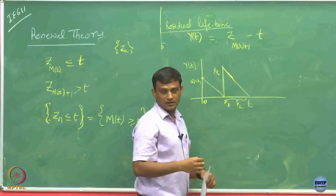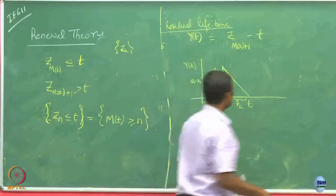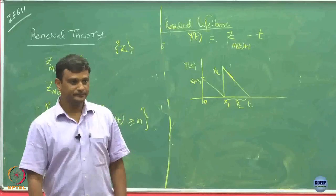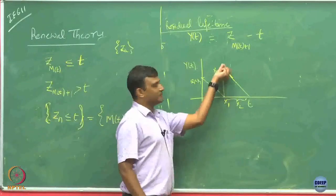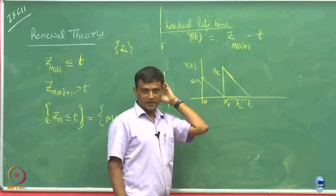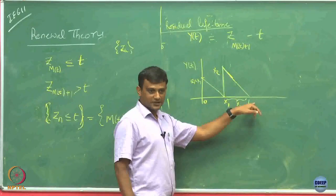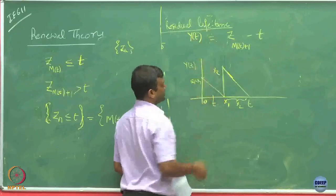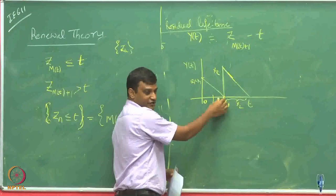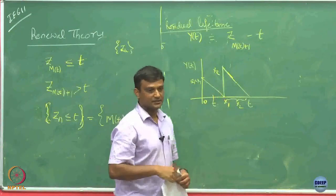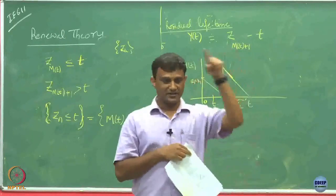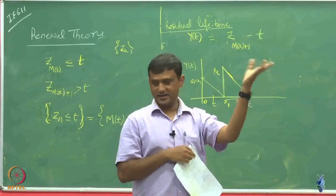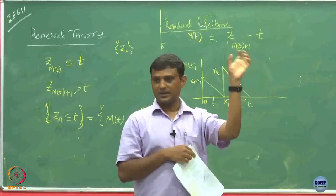It is falling down to 0 at unit negative rate. Going back to the battery analogy: when you charge a battery, its residual life is full. As time passes, its life goes to 0. So Y(t) at any time t gives the remaining time before the next renewal — in the battery example, the time before the battery gets discharged. That is why it is called residual lifetime.